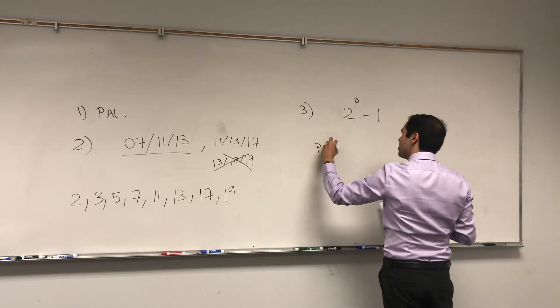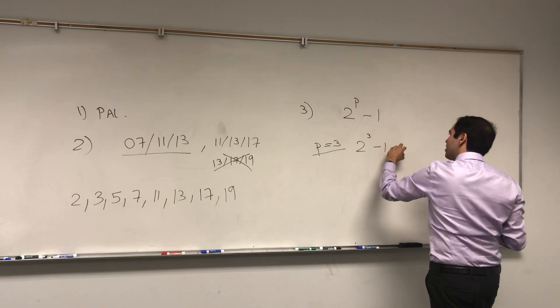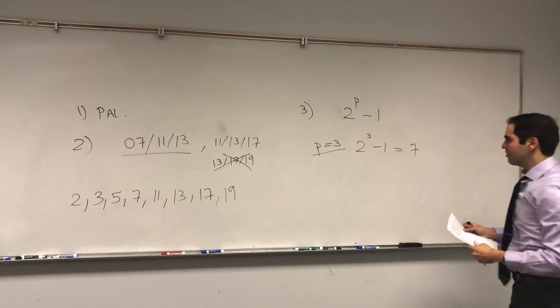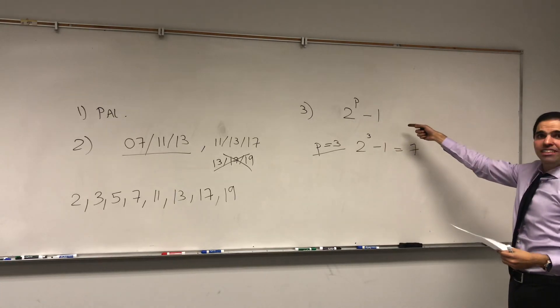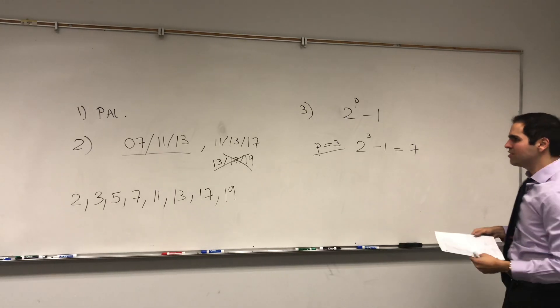Not every number is a Mersenne prime, but some Mersenne primes are, in fact, prime numbers. So if you do p equals 3, that gives you 2 to the 3rd minus 1, which is 7. Again, it doesn't guarantee that you get a prime number, but lots of prime numbers are of this form.